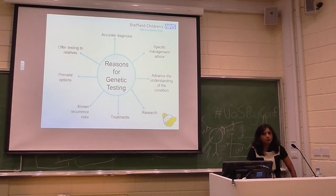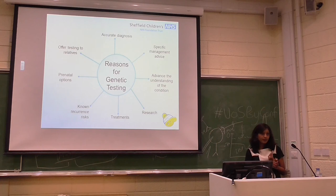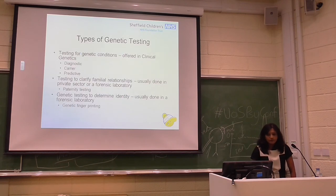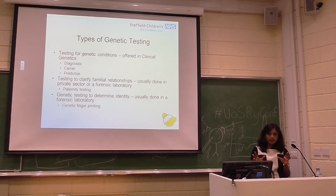There are a multitude of reasons why genetic testing would happen: to make an accurate diagnosis, provide management advice, explore therapeutic options, help families advance their understanding of the condition, open up extended family testing, clarify recurrence risk, and provide options for testing during pregnancy. It's important to note that we do not get involved with paternity testing or genetic fingerprinting — we're purely focused on genetic testing for diagnostic, carrier, or predictive status.